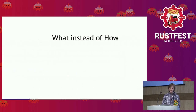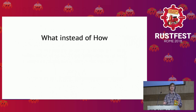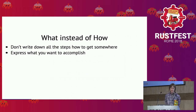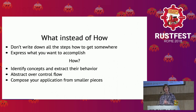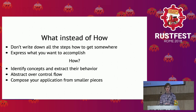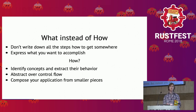I'd summarize it as: it's about the 'what' instead of the 'how.' The idea is that you don't write all the steps on how to get somewhere, but instead you try to express what you want to accomplish and have your computer do the work. A few steps: identify concepts your program is about, extract their behavior, abstract over control flow — having fewer colorful keywords and more expressive function names — and compose your application from smaller parts.